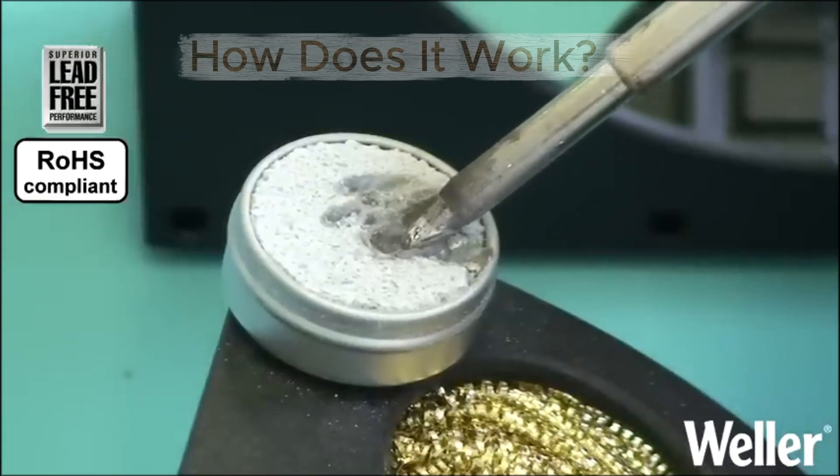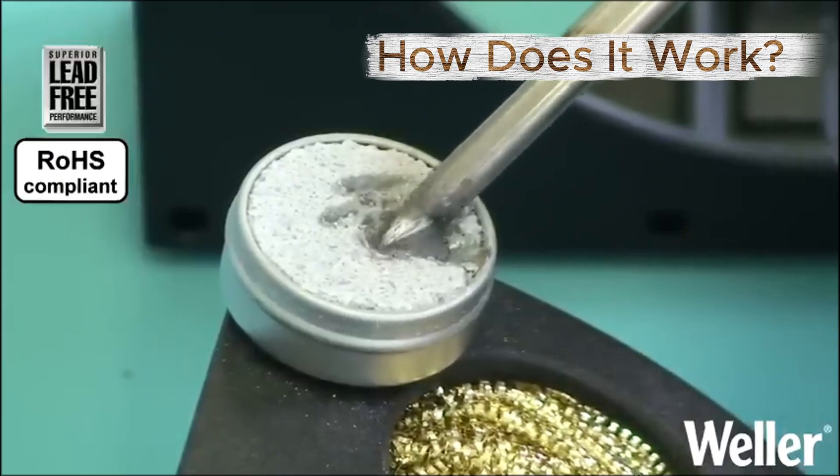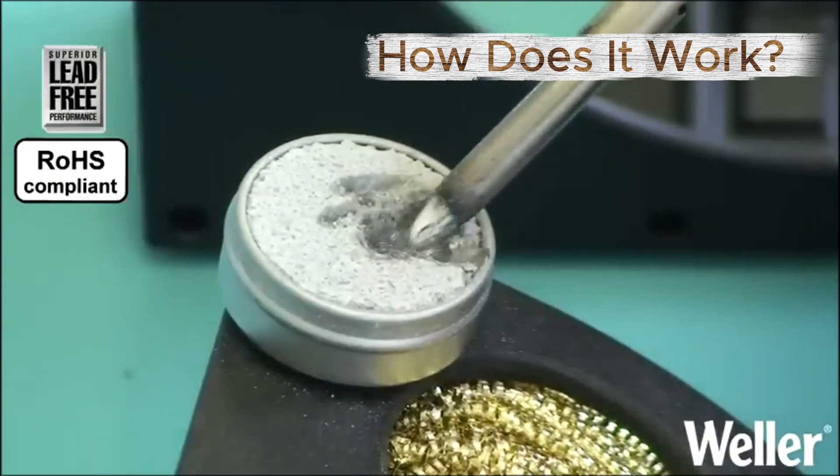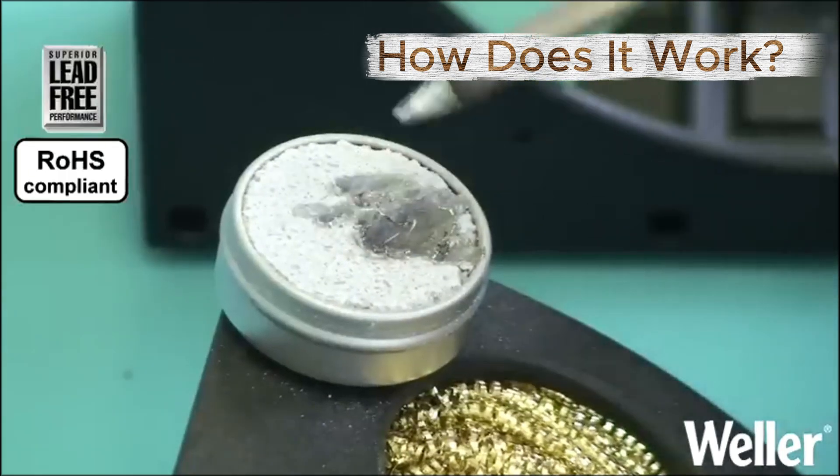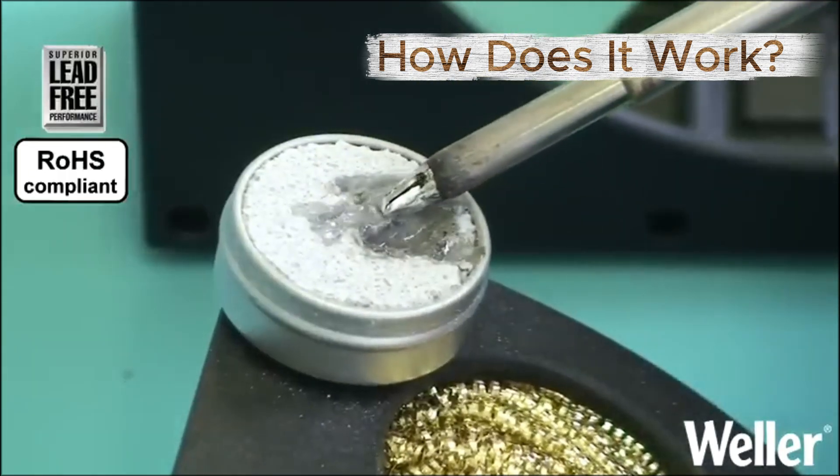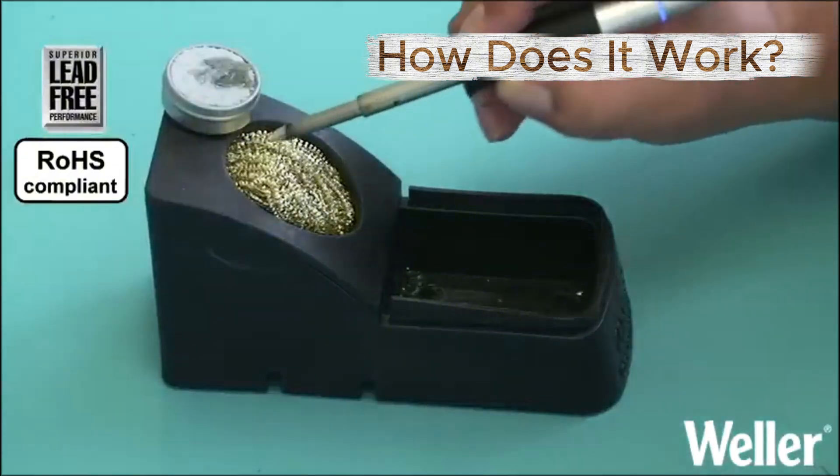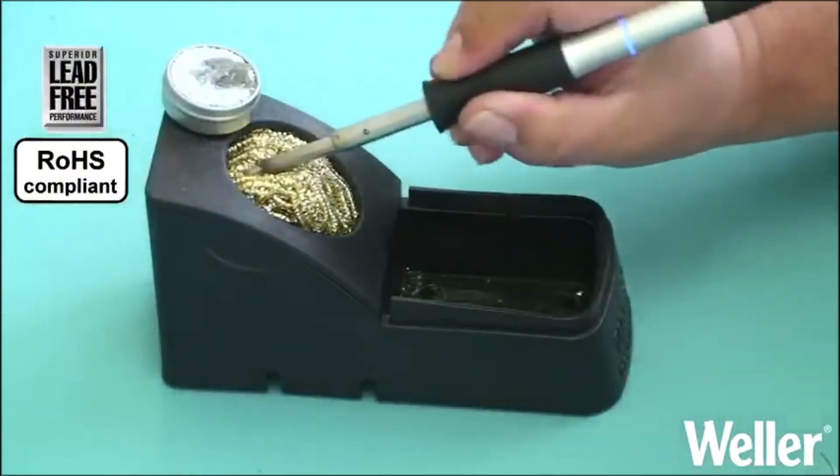The way these compounds work: when a hot soldering tip is applied to the activator, the powdered chemical melts and reacts with the metal oxides on the soldering tip surface. It then dissolves and lifts the oxide layer, exposing the clean underlying metal.